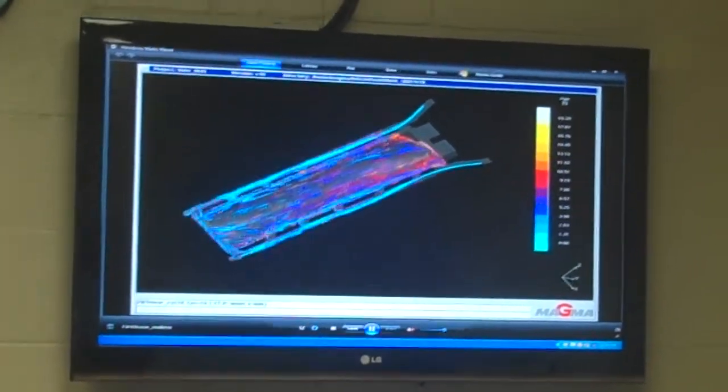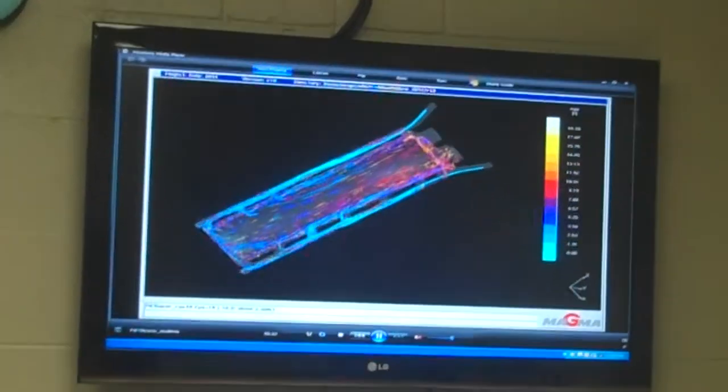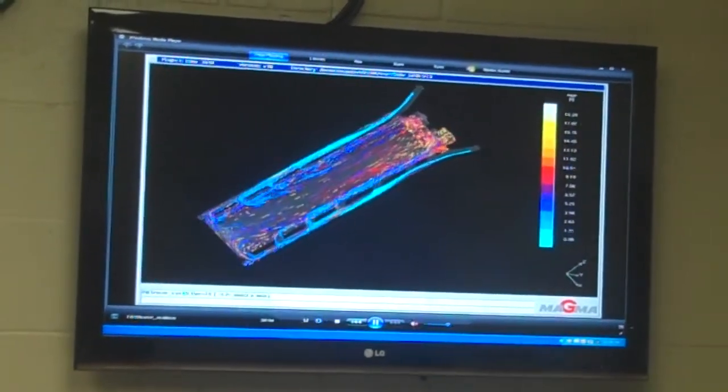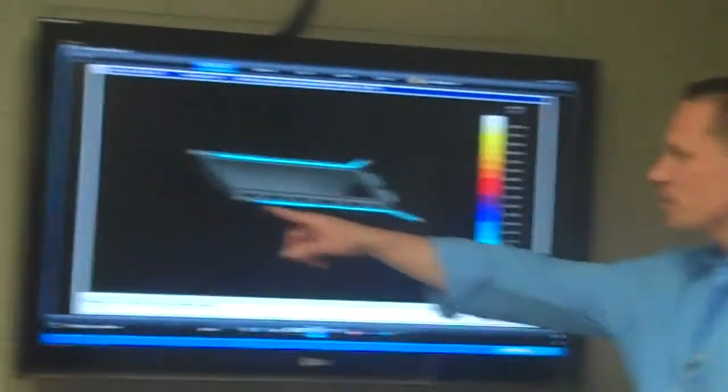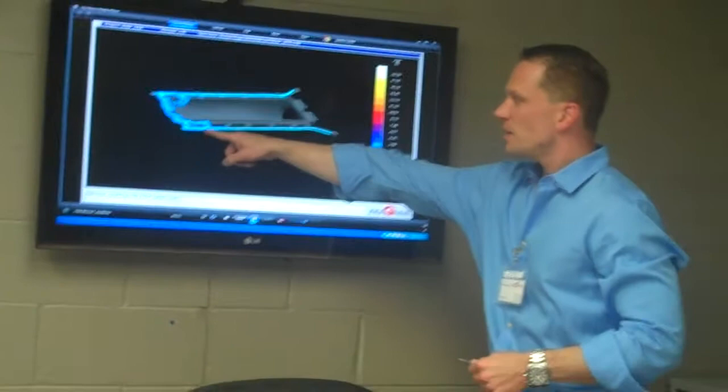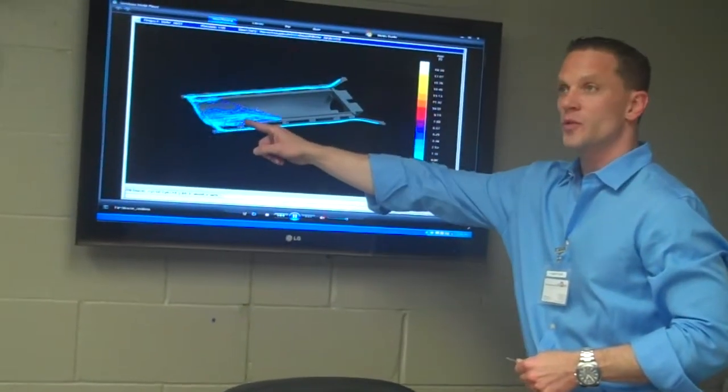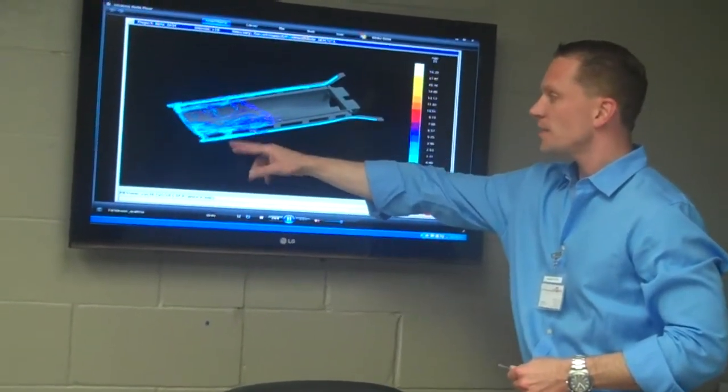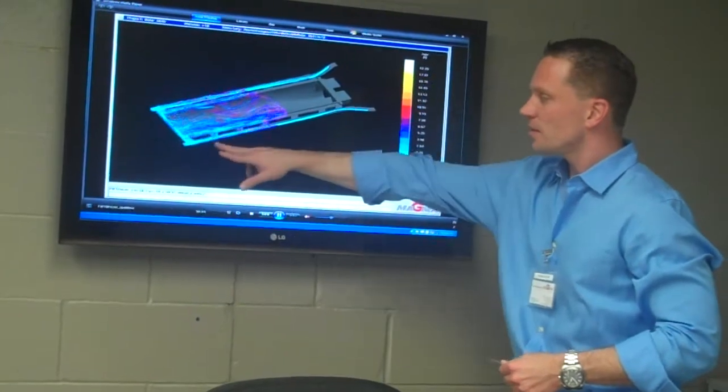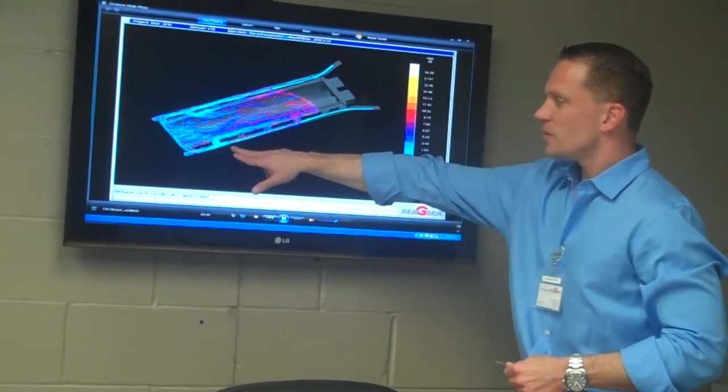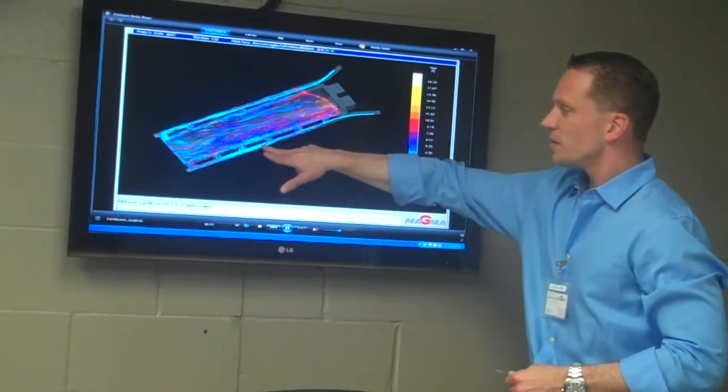So what we can see is when the different ingates actually become active with different metal. You can see basically as it continues to tilt, obviously these are the main ingates that are active that fill the majority half of the bottom section of the casting. Then as it continues to tilt, it starts to switch. It starts to switch and come up.